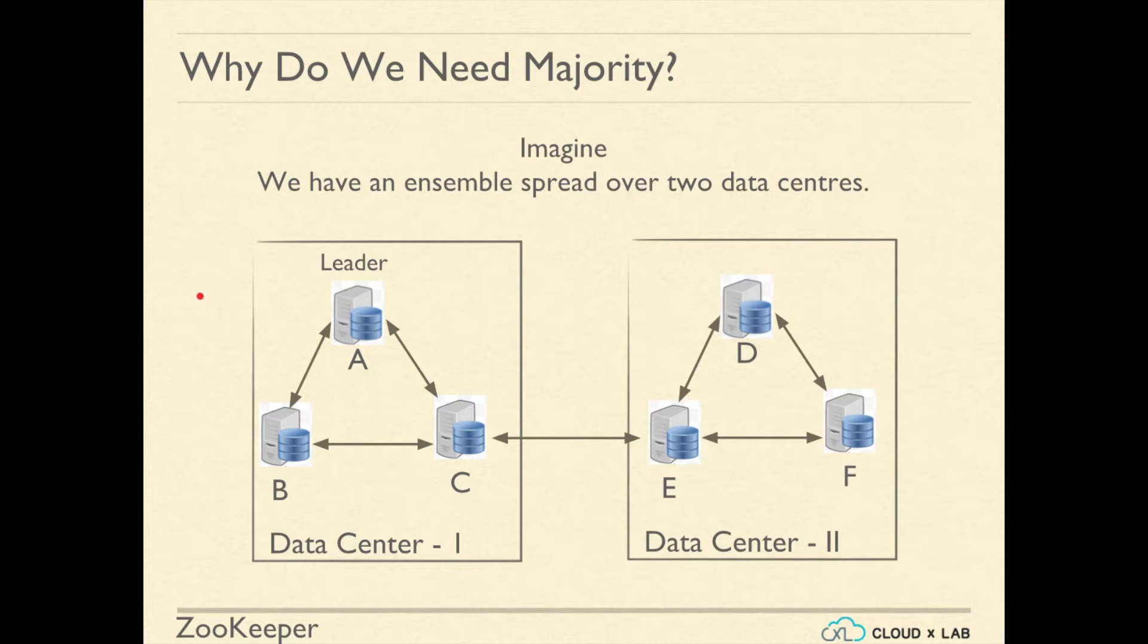Say we have an ensemble spread over two data centers: three machines A, B, and C in data center one, and three other machines D, E, and F in data center two, with A as the leader of the ensemble. After a while,